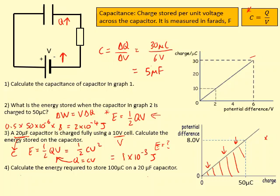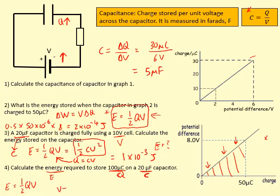In the last question, we have both charge and capacitance given. We can't use E = ½QV because we don't have the voltage, so we need a new equation. Starting from E = ½QV, we substitute V = Q/C to get E = ½Q²/C. Putting the numbers in should give 2.5×10⁻⁴ joules.